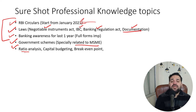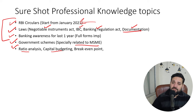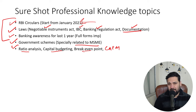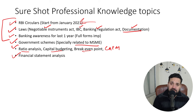Ratio analysis is most important. If there are any numerical questions, they will come from ratio analysis — and a calculator is not needed; you can do it easily. For capital budgeting, studying the theory is sufficient. Break-even point and CAPM are also somewhat important. For financial statements, you need a basic understanding of balance sheets, liabilities, assets, and how working capital is calculated.